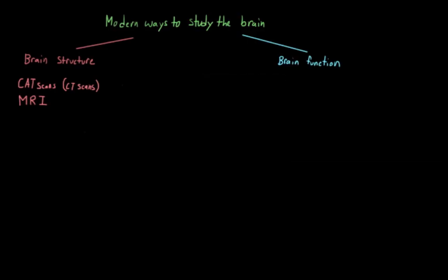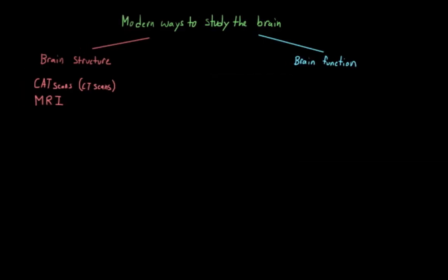But, much like a CAT scan, while the MRI can give us a detailed image of the structure of the brain, it also doesn't tell us anything about brain function. It can't tell us anything about what the brain is actually doing. To look at that, we have to use different methodologies.